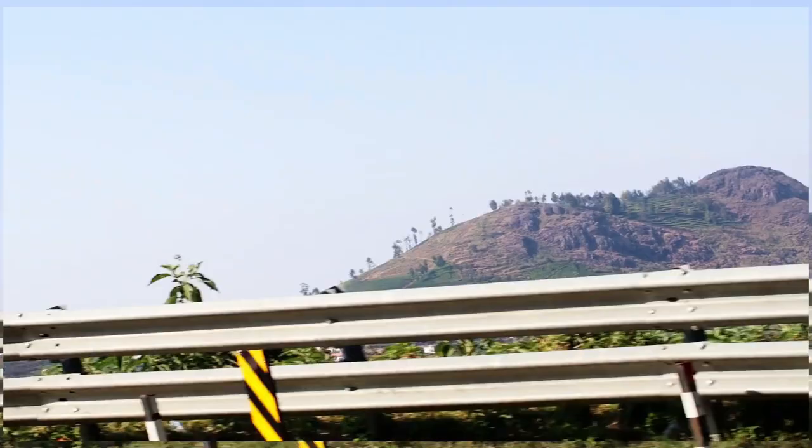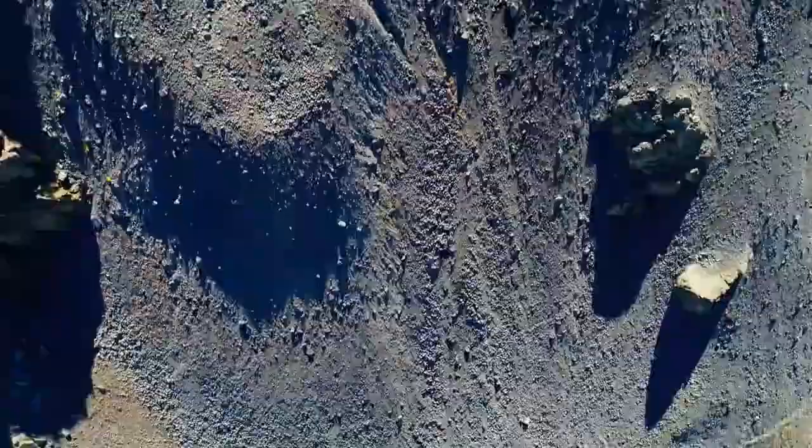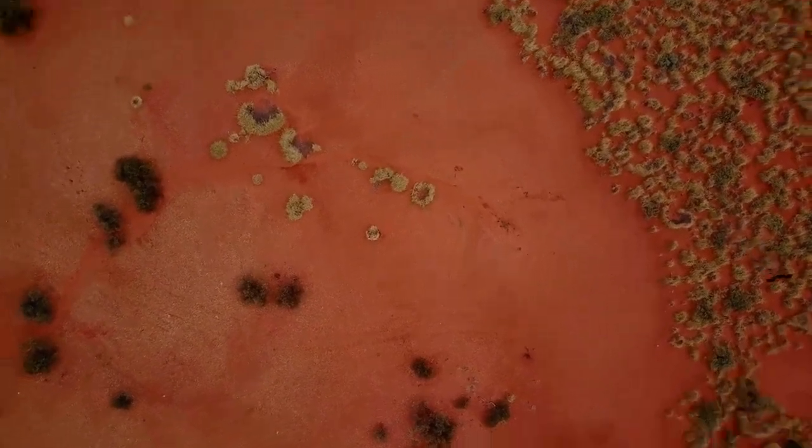Curiosity has detected sudden spikes of methane levels that vanish just as quickly as they appear. On Earth, most methane in the atmosphere is produced by living organisms. But on Mars, its presence is difficult to explain. The gas should break down quickly under Martian UV radiation, meaning there must be an active source replenishing it.